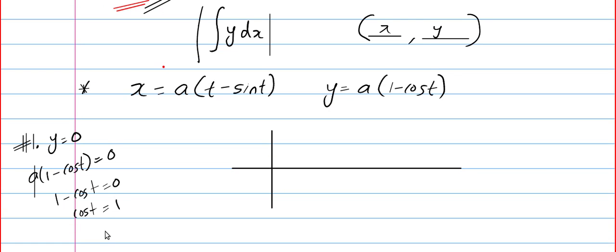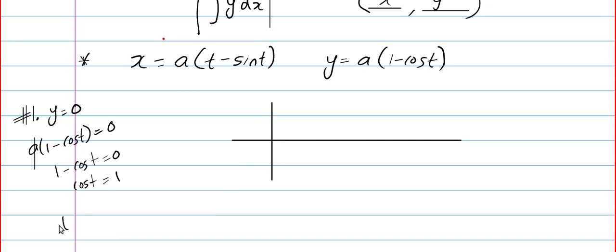Now, this happens if t equals 0 or t equals 2π, 360 degrees and it keeps on repeating. But to draw my cycloid, this is more than enough. So, I am going to mark with red, 0 and 2π.